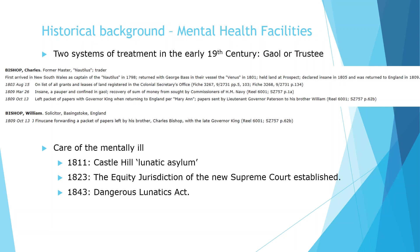I will now briefly provide the historical background for mental health facilities. There were two systems for the treatment of the mentally ill in the early 19th century. The first allowed early colonial governors to make orders to detain lunatics or the insane, later devolved to police and magistrates. Prior to 1811, when Castle Hill Lunatic Asylum opened, a person declared insane was held in a jail. The second system generally only applied to the middle class or better-off colonists who held assets — friends or relatives could petition the Governor to have a person declared insane, with their assets transferred to a trustee.